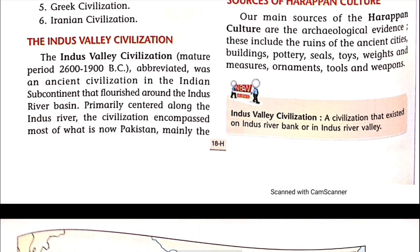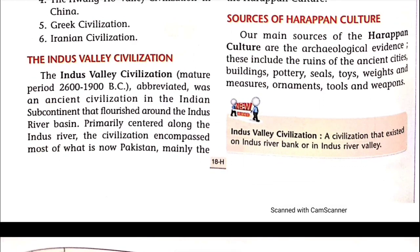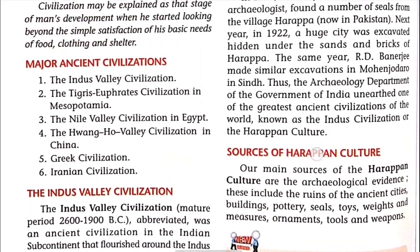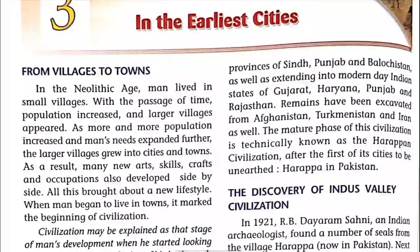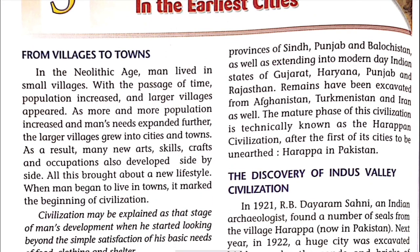Primarily centered along the Indus River, the civilization encompassed most of what is now Pakistan — mainly the provinces of Sindh, Punjab, and Baluchistan। इसके अलावा, इसका कुछ हिस्सा modern-day Indian states तक भी extend हुआ — जैसे Gujarat, Haryana, Punjab और Rajasthan तक।